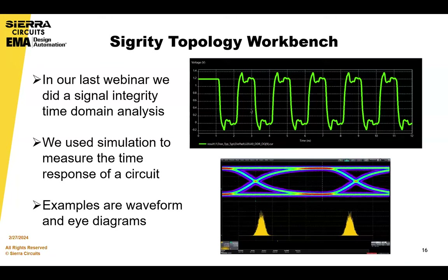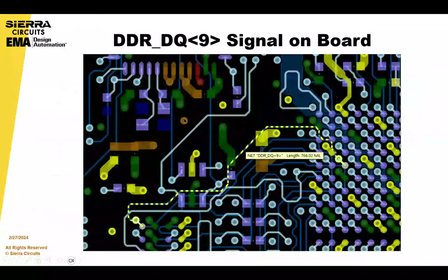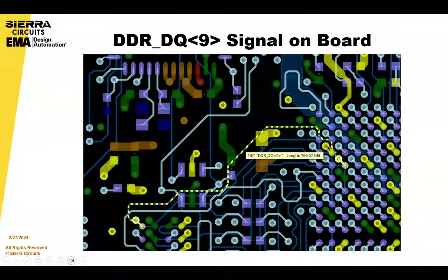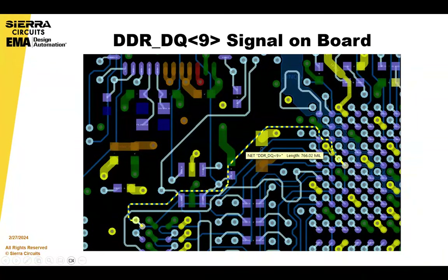Time domain simulations are used for waveform simulations and eye diagrams. We picked out a signal on that board — it's a DDR DQ9 signal. You'll notice there is the dog bone type termination routing used for a BGA, where you immediately go through a VIA. And there is an adjacent ground pin supplying the return current, which is the grounding structure they were talking about.